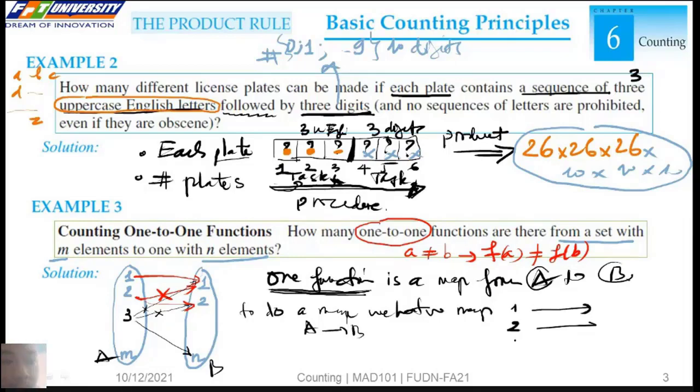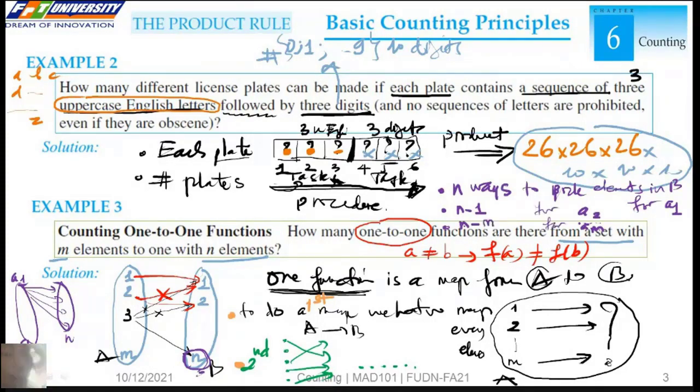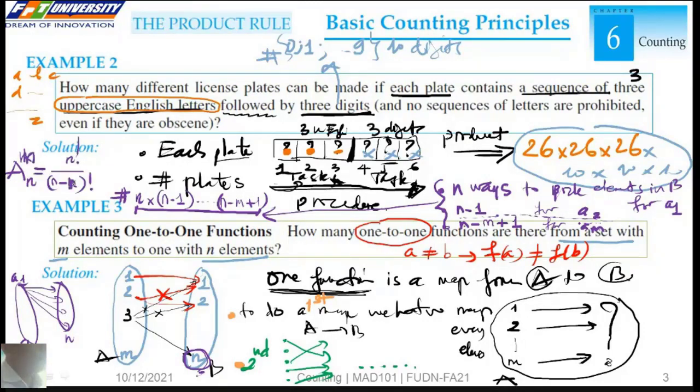To do a map from a to b, we map 1, 2, n. Because here we have n, we have n ways to pick element in b for a1. For a2, we have only n minus 1 ways. So am, we have n minus m plus 1. By the product rule, we have n multiply n minus 1, then n minus m plus 1. Remember A(n,m).